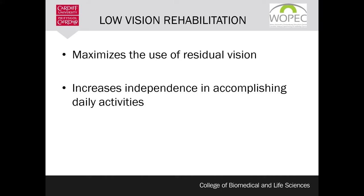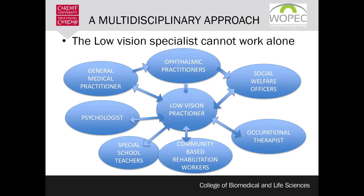To properly and fully attend to the needs of someone living with vision impairment, we need to link up with other professionals and disciplines — including general practitioners, special school teachers, physiotherapists, occupational therapists, community-based rehabilitation workers, and psychologists. It is basically impossible to work alone as a low vision practitioner. Sometimes you may have to talk to family members, chiefs, and local authority heads to achieve your goals for clients. A good welfare system is also needed to support people living with low vision, as they are at risk of losing more than just their vision.